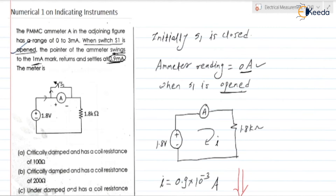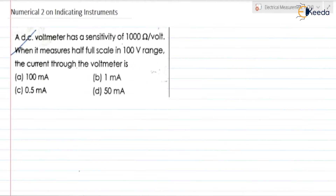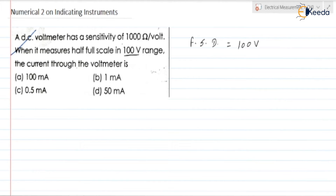This is about numerical 1 on indicating instruments. For numerical 2: a DC voltmeter has a sensitivity of 1000 ohm per volt. When it measures half full scale on the 100 volt range, the current through the voltmeter is to be found.